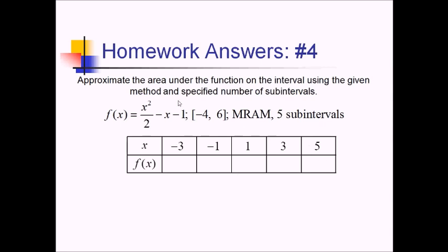Now I'm just going to plug each of these in to get some y values. I'm going to do decimals instead of fractions. So this is going to be 9 over 2 is 4.5, plus 3 is 7.5, minus 1 is 6.5. Next we plug in negative 1: 0.5 plus 1 is 1.5, minus 1 is back to 0.5. Plugging in positive 1: 0.5 minus 1 is negative 0.5, minus another 1 is negative 1.5. Plugging in 3: 4.5 minus 3 is 1.5, minus 1 is 0.5 again. And then 5: 25 over 2 is 12.5, minus 5 is 7.5, minus 1 is 6.5. So it's got the symmetry that we would expect from a quadratic.